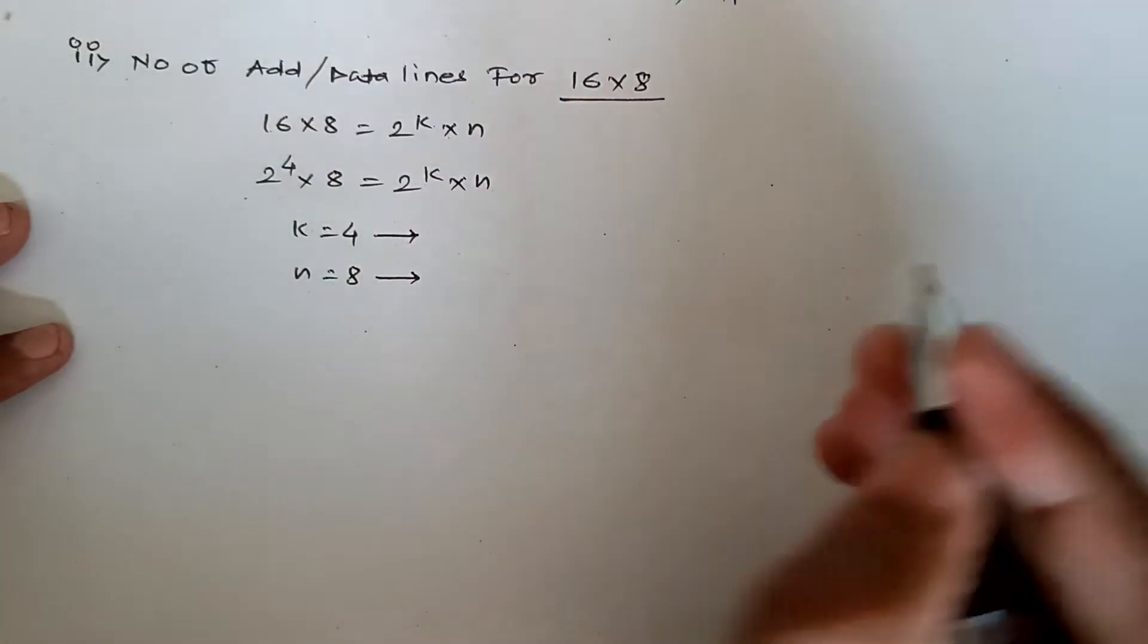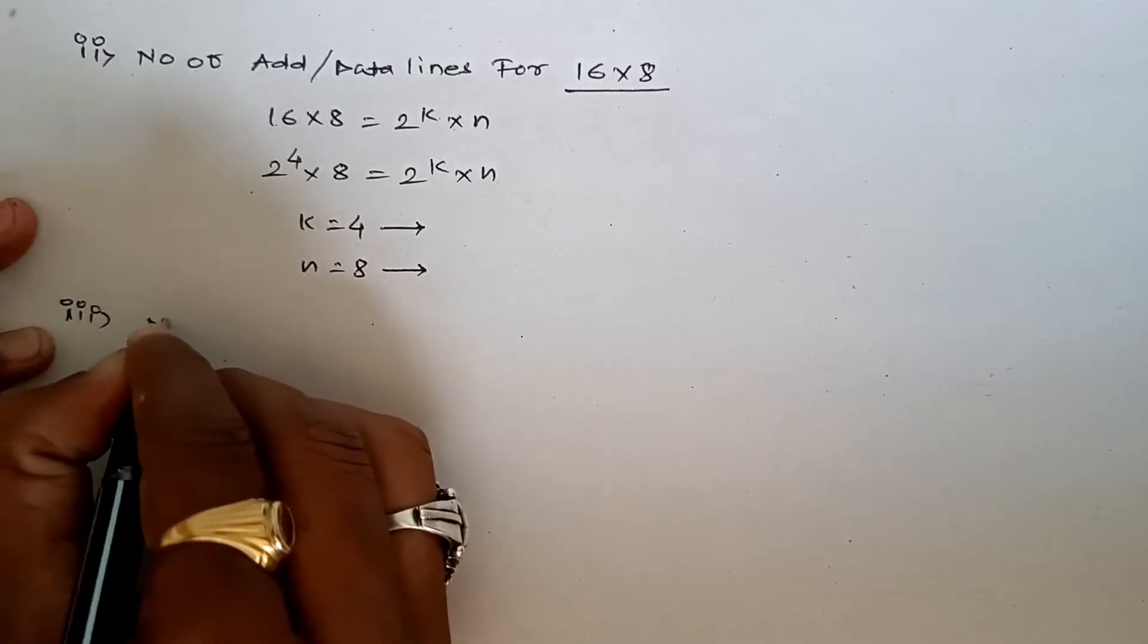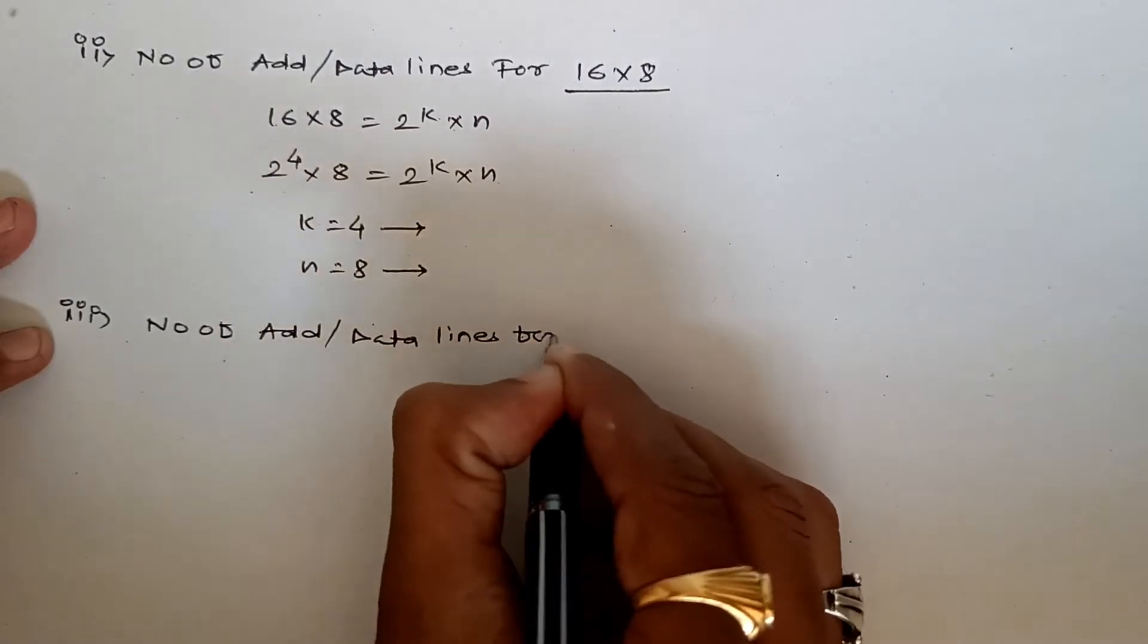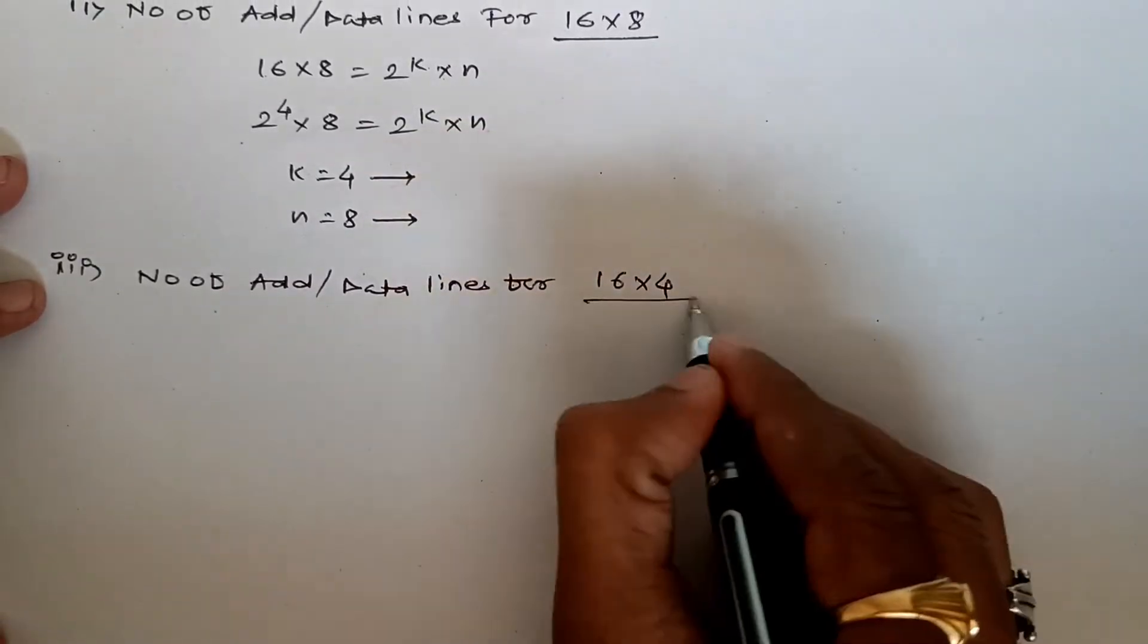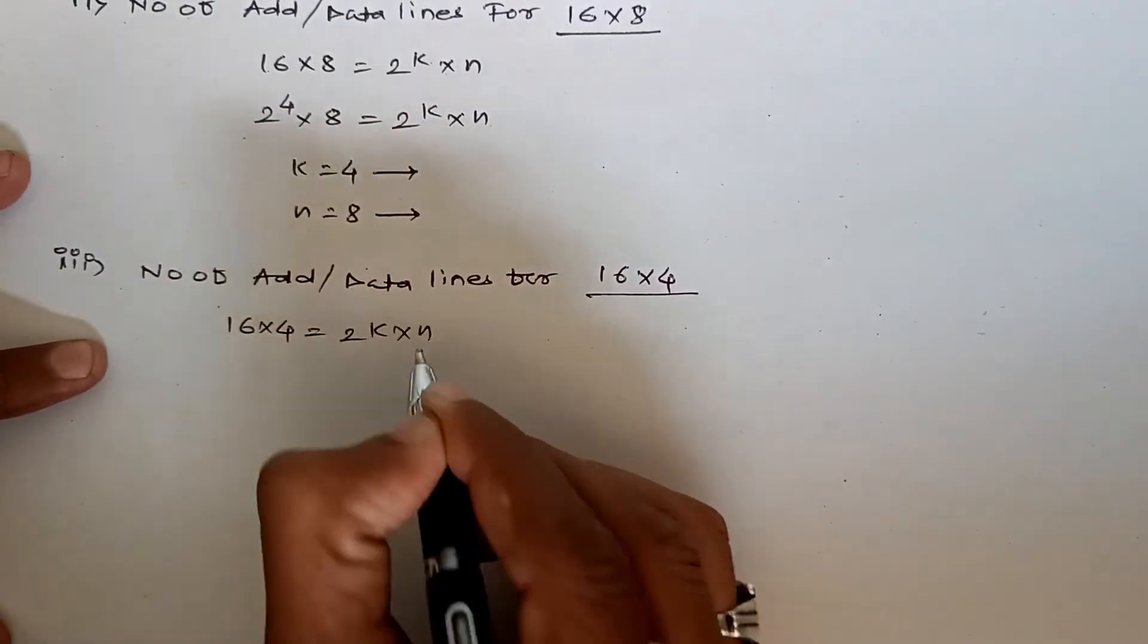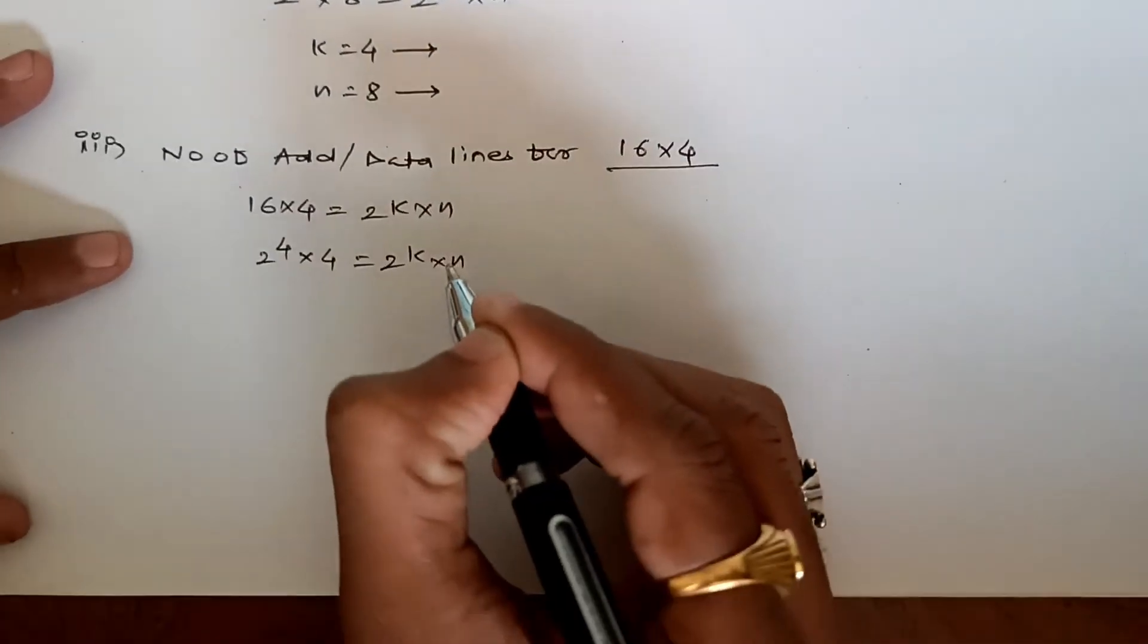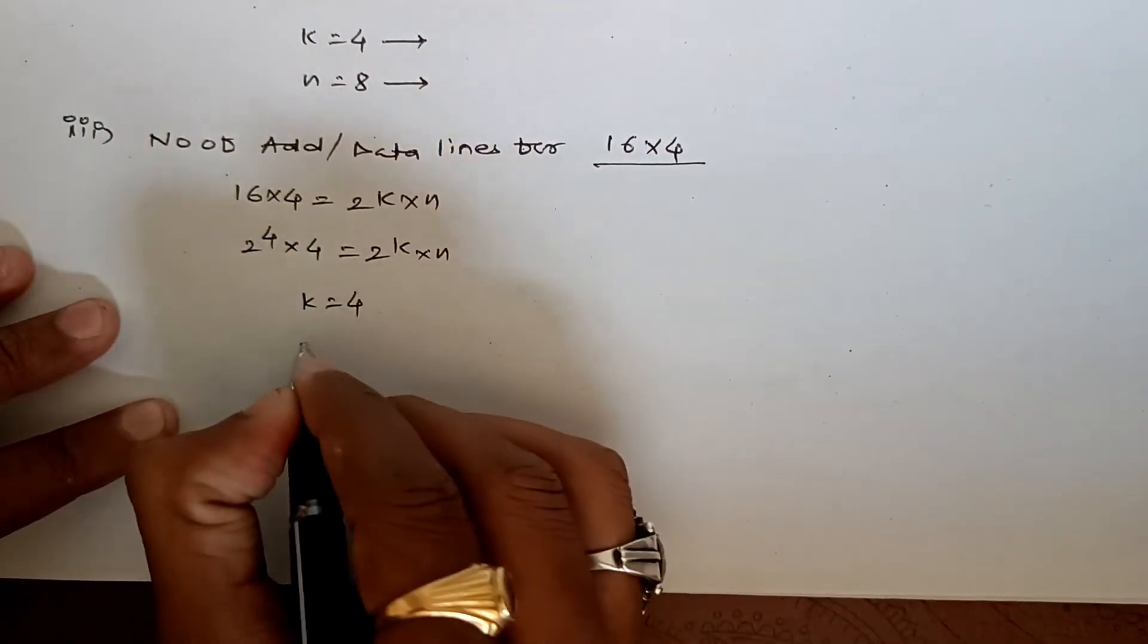Third: number of address and data lines required for the available IC, which is 16 by 4. So for 16 by 4 equals 2^k by n, which is 2^4 by 4. Comparing both sides we get k=4 and n=4.